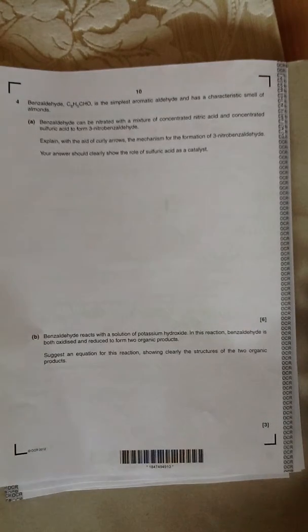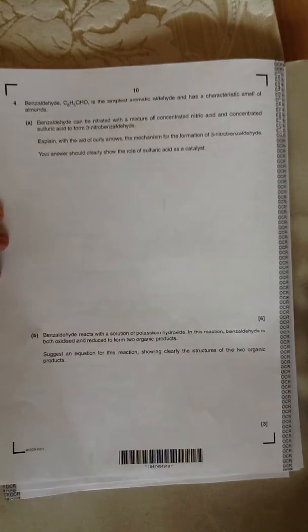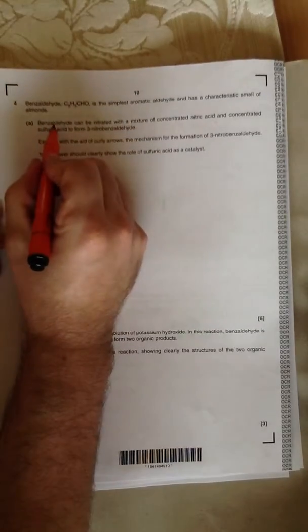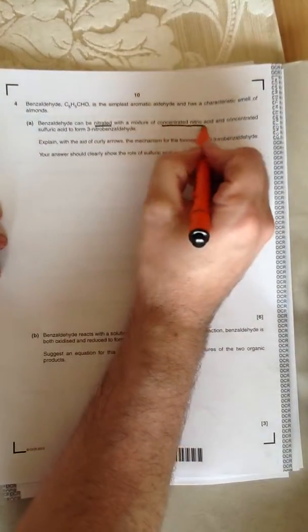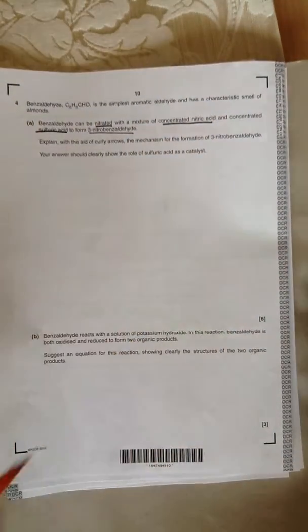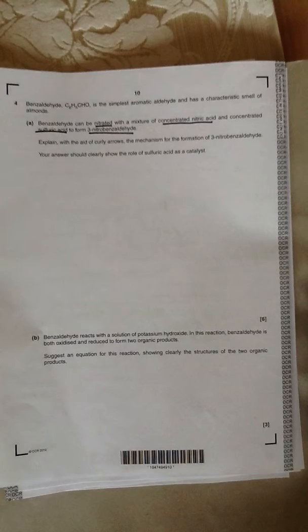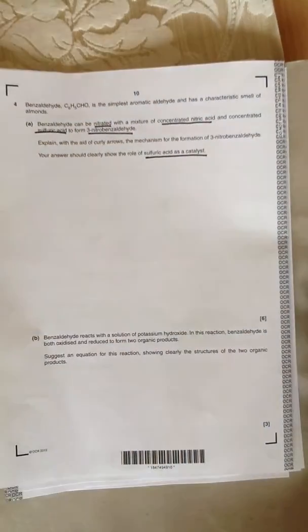It says benzaldehyde C6H5CHO is the simplest aromatic aldehyde and has a characteristic smell of almonds. Benzaldehyde can be nitrated with a mixture of concentrated nitric and concentrated sulfuric acid to form 3-nitrobenzaldehyde. Show with the aid of curly arrows the mechanism for the formation of 3-nitrobenzaldehyde. Your answer should also show the role of sulfuric acid as a catalyst. Six marks.